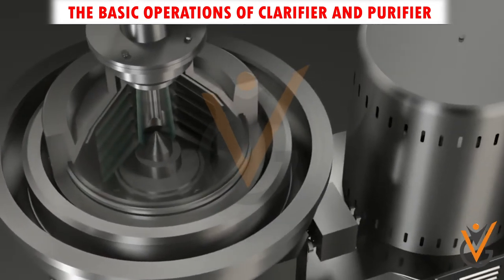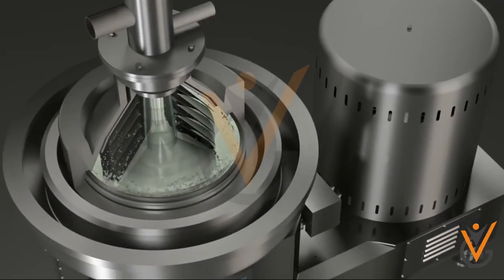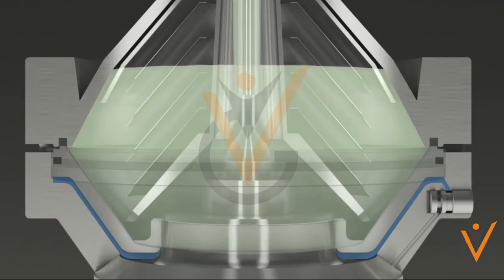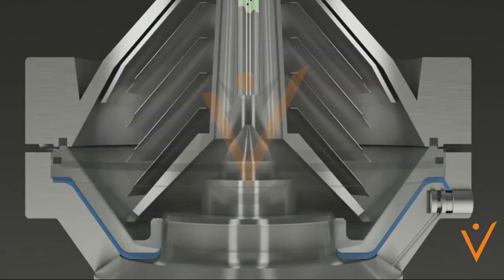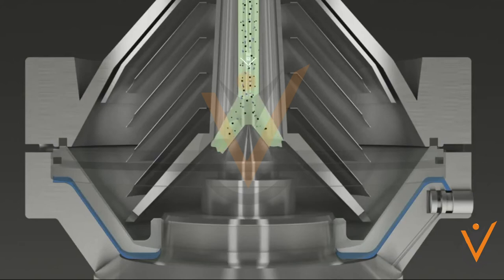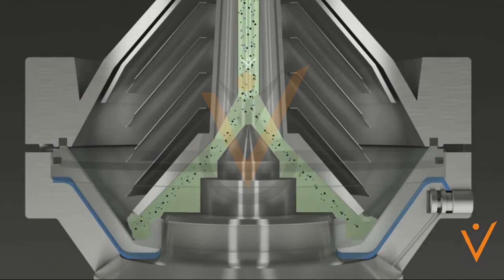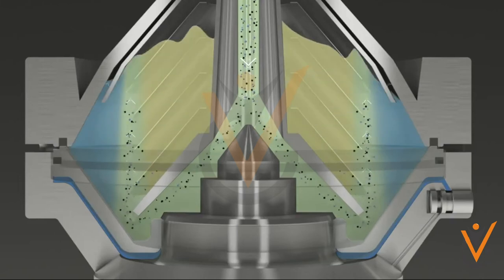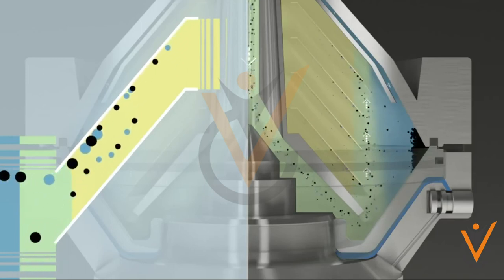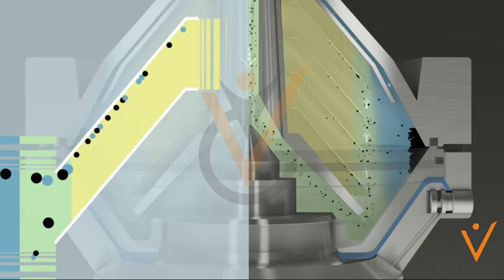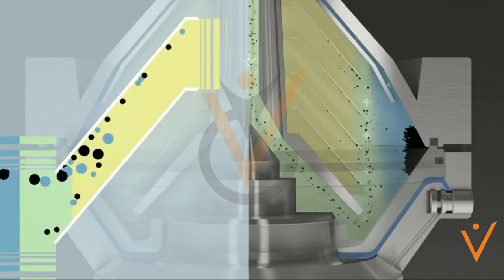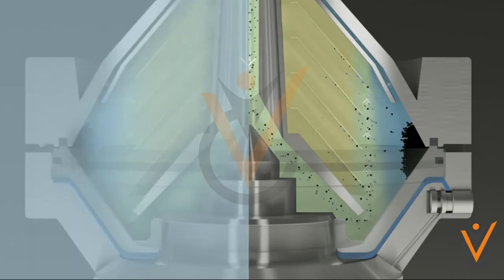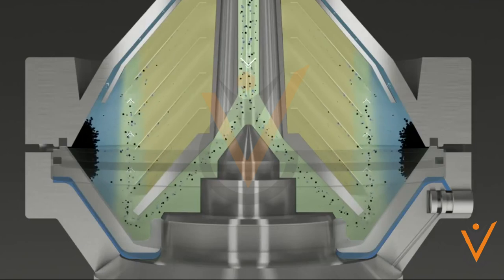The basic operations of clarifier and purifier: It contains a stack of disc numbering up to 150 and is separated from each other by a very small gap. A series of holes are aligned in each disc near the outside edge which permits the entry of dirty oil. Due to the difference in gravity and centrifugal force, the heavier impure liquid, water, and particles move outside and lighter clean oil flows inwards and gets separated. The collected sludge and impurity can be discharged continuously or at a time interval, depending upon the construction, automation, and system incorporated.